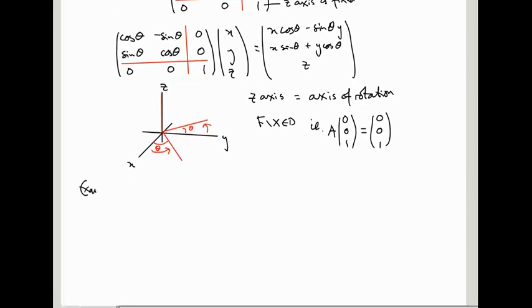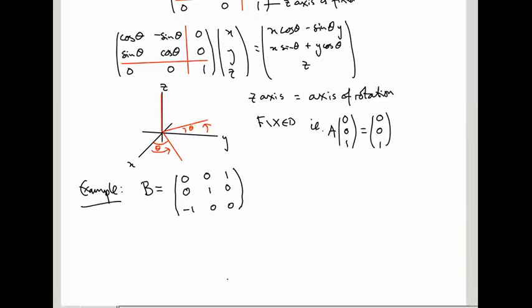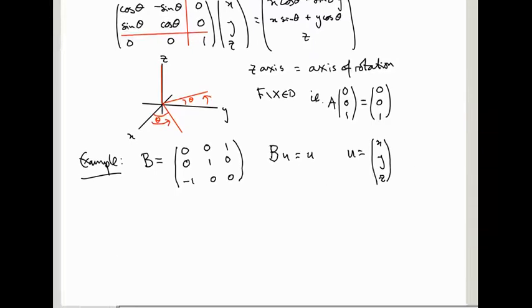Let's do another example. Take matrix B = [0, 0, 1; 0, 1, 0; -1, 0, 0]. I claim this is a 3x3 rotation matrix, and we can find the axis of rotation by solving the equation Bu = u, where u = (x, y, z). In other words, a vector on the axis of rotation will satisfy Bu = u.